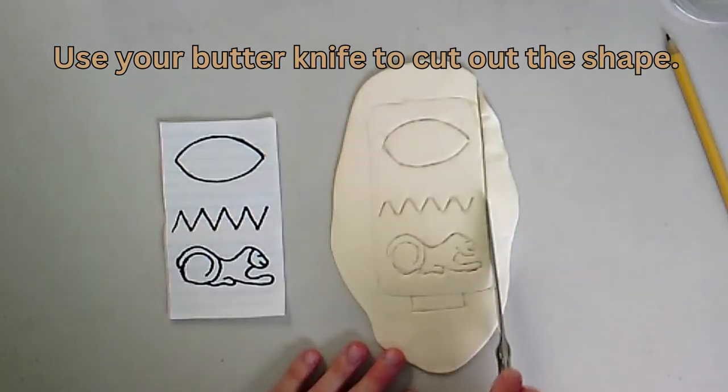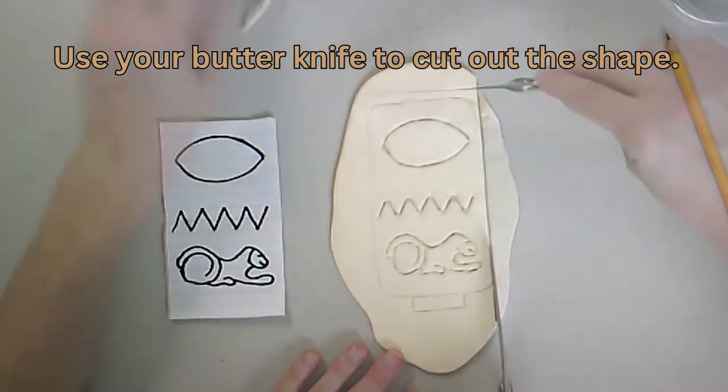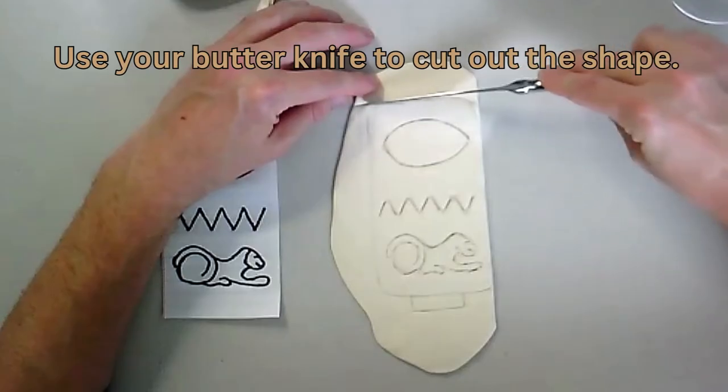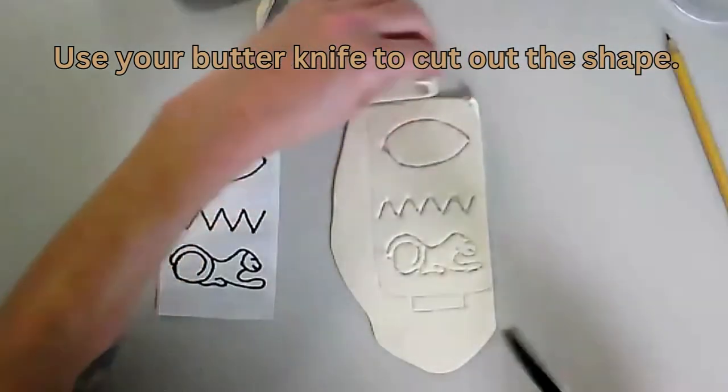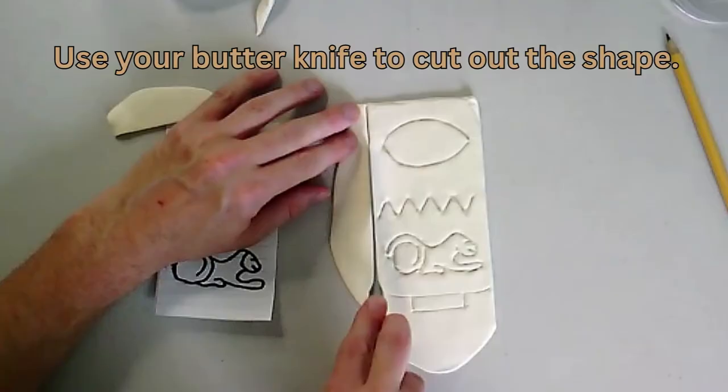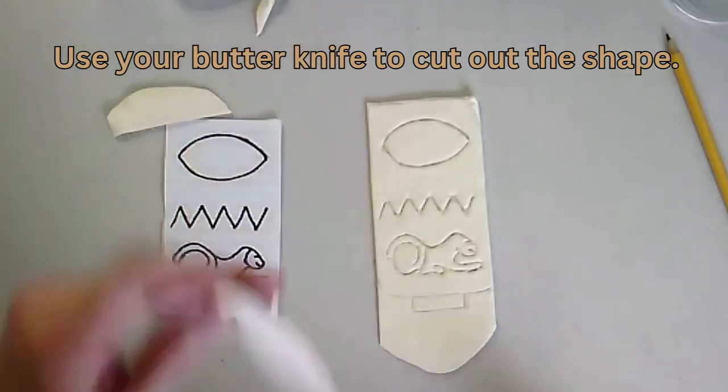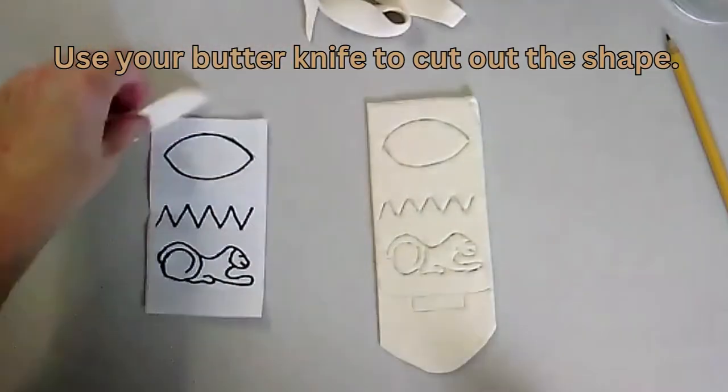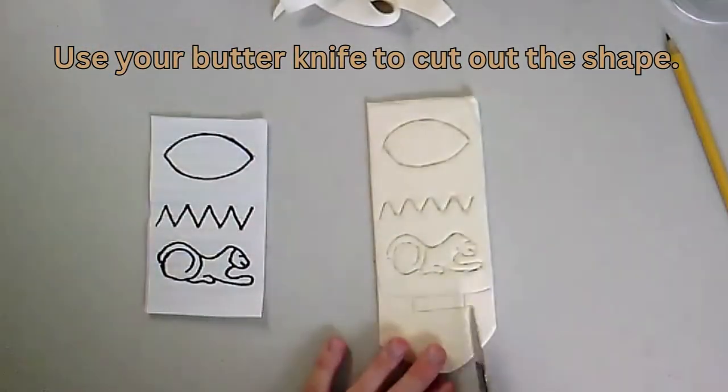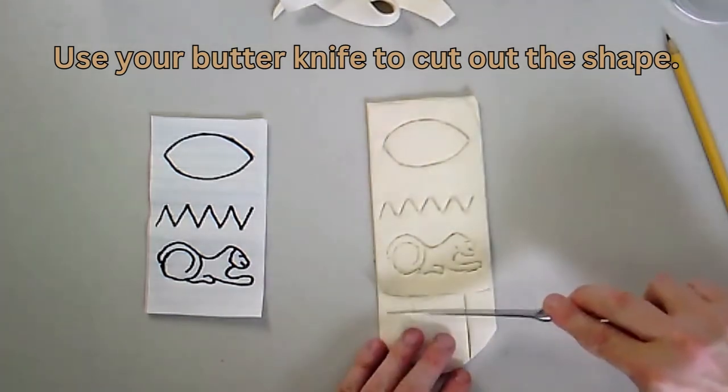And I'm just going and carefully going around, starting with the rectangle and then I'll edge off the corners. And I'm going to save these pieces for later because we're going to be going around our cartouche and giving it a little bit of decoration.